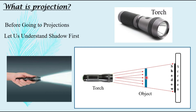Also, the size depends on the distance between the object and the shadow. If you move this object towards the torch, you will have a larger shadow compared to the actual size of the object. Whereas if you move this object to a position nearer to the screen, the size of the shadow will be reduced. So a shadow will have the same shape but can have a different size.